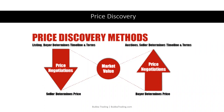Stocks, futures, options — everything has to be determined by a price discovery mechanism where a buyer and a seller meet and the exchange of wealth takes place. You sell your house, you sell a car — you're always discovering price. It's worth what somebody is willing to pay and what somebody is willing to sell it for.